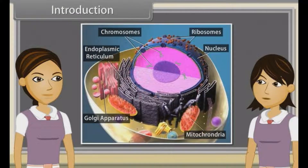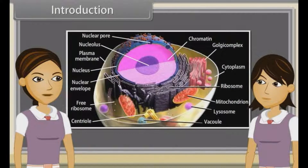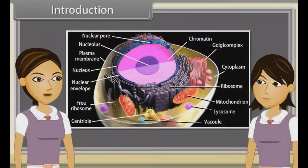I think we have completed all the topics. No Madhuri, there are some more topics to be learned. They are the structure of cytoskeleton, cilia and flagella, centrosomes and centrioles, nucleus and microbodies. So come, let's know about them in this module.